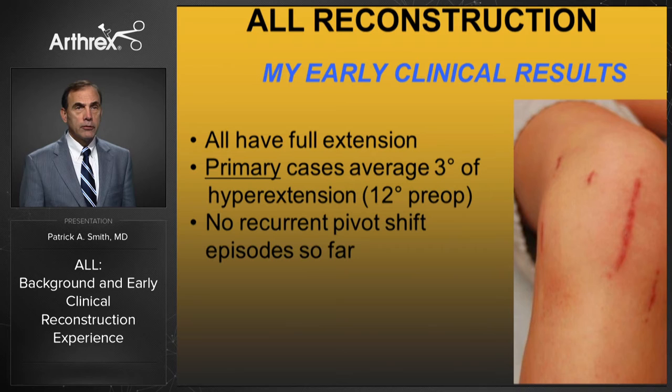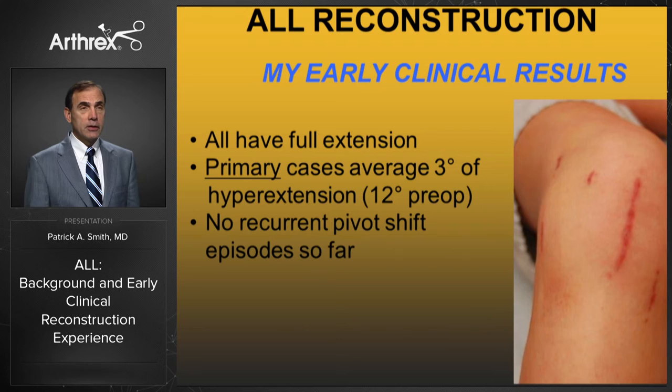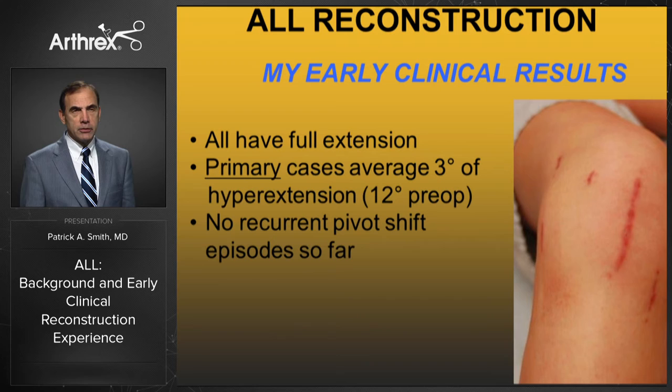In my early clinical results, all patients have full extension with no problems with flexion. The primary cases, which averaged 12 degrees of hyperextension preoperatively, were reduced to only 3 degrees on the operated side. In one case you can see a slight prominence on the lateral side even after several months — patients can feel the graft there, though it is a small graft. So far I have not had any problems with re-injury or recurrent pivot shift; these have been very stable knees.